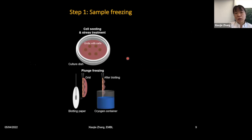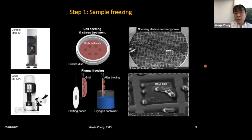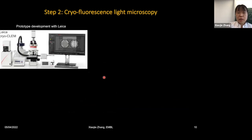Cryo-ET starts with sample freezing. Cells are seated on TEM support grids. Once we induce stress granule formation inside cells, monitored by live imaging, we immediately flash-freeze the grids using commercially available devices such as the Vitrobot or Leica EM GP2. By scanning electron microscopy, you can visualize how the grid looks and how cells are seated at the center of each grid square, enabling the next sample preparation step.